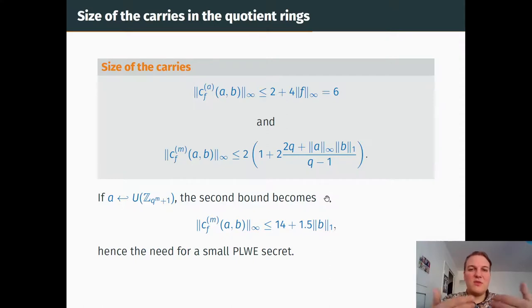In the end, we found bounds on the carries. It's constant for additions and dependent on the size of a and b for multiplication. If I take a uniform, which will be happening in the SIPLWE problem, then the second bound can be expressed depending on the size of b solely. That's why we need a small PLWE secret. We want this bound to be useful.